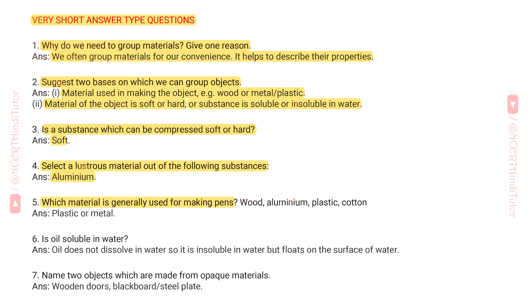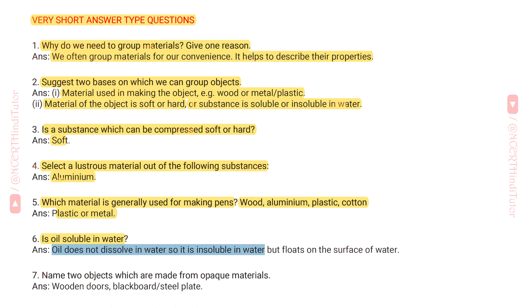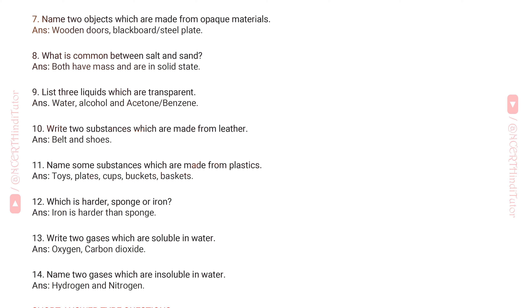Question 5: Which material is generally used for making pens — wood, aluminium, plastic, or cotton? Answer: Plastic or metal. Question 6: Is oil soluble in water? Answer: Oil does not dissolve in water, so it is insoluble in water, but floats on the surface of water.